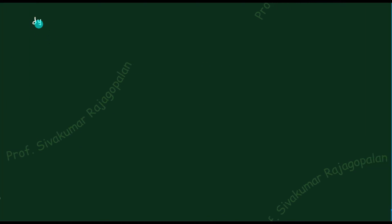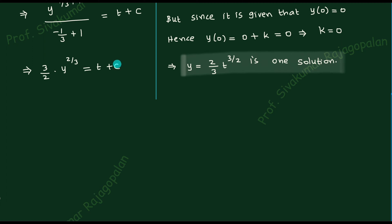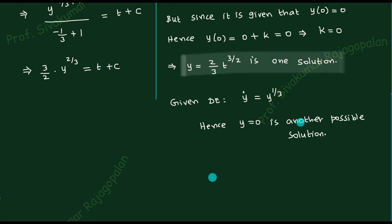Now I'll write down the given problem: dy/dt = y^(1/3). The other steps are straightforward. After integrating, we get a constant — let's call it k. Applying the initial condition y(0) = 0, we substitute and find that the constant k = 0. With k = 0, what remains gives us a solution.